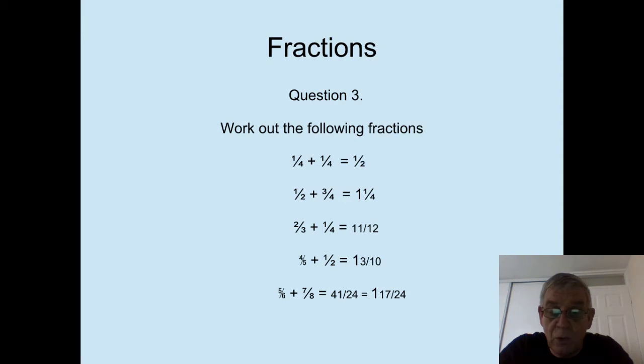Two thirds plus one quarter will actually give you eleven twelfths. Because the common denominator for three and four is twelve. If you divide three into twelve, it goes four times. Four times the numerator will be four times two, which gives you eight. So that's eight over twelve plus one quarter in twelve. You multiply the denominator by three, so you have to do the same with the top, giving three twelfths. So we've got eight twelfths plus three twelfths, giving us eleven twelfths as the answer.